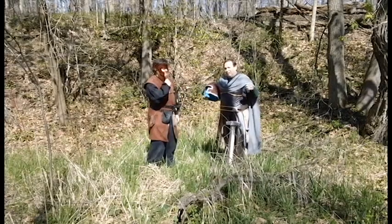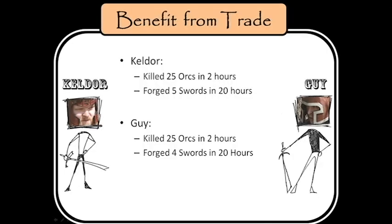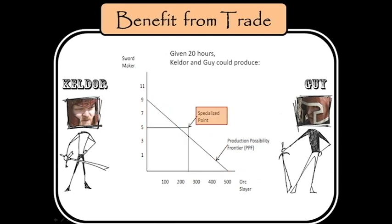Would they benefit from specialization? Remember that Kelder killed 25 orcs in 2 hours and forged 5 swords in 20 hours. Guy killed 25 orcs in 2 hours and forged 4 swords in 20 hours. Given 20 hours, Kelder and Guy could produce 9 swords or kill 500 orcs, or any combination of both below the production possibility frontier.